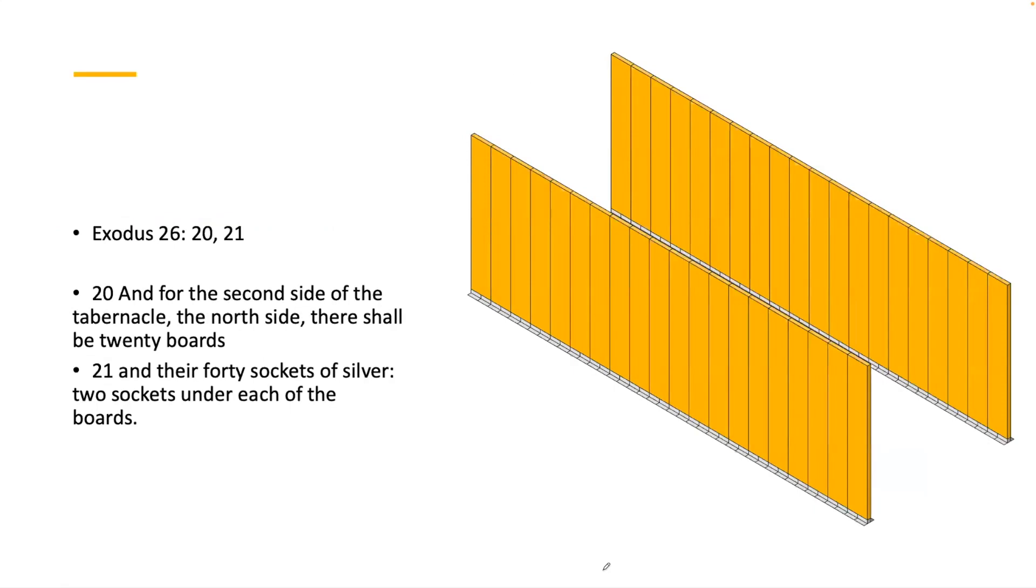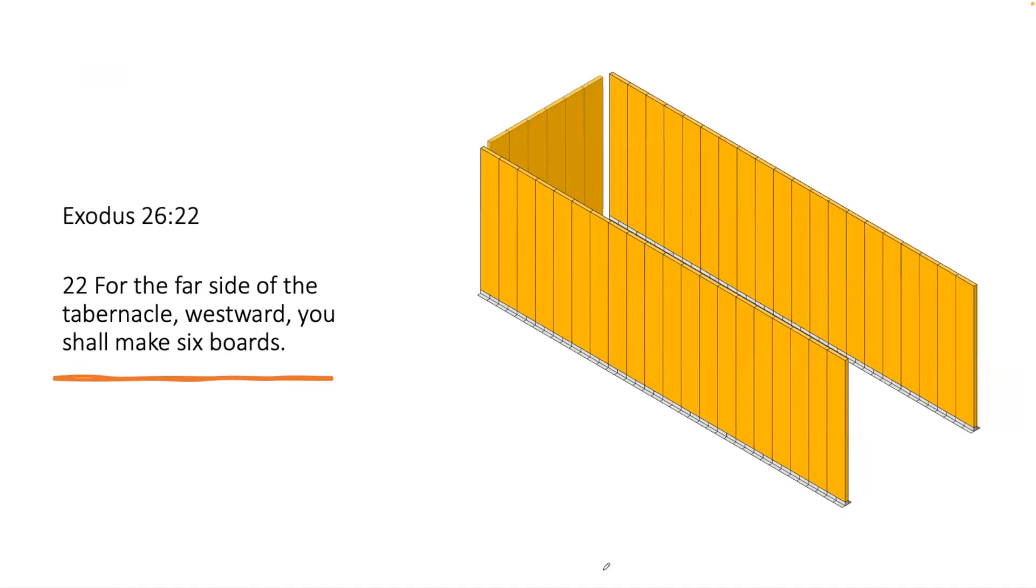Exodus 26:20-22: 'For the second side of the tabernacle, the north side, there shall be twenty boards and their forty sockets of silver—two sockets under each board. For the far side of the tabernacle westward, you shall make six boards.'